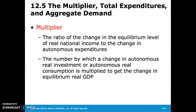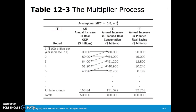The multiplier is the ratio of the change in the equilibrium level of real national income to the change in autonomous expenditures — the number by which a change in autonomous real investment or autonomous real consumption is multiplied to get the change in equilibrium real GDP. For example, assuming the marginal propensity to consume equals 0.8, a $100 billion increase in real GDP leads to an $80 billion increase in planned real consumption, which in turn increases real GDP by $80 billion, and so on until that initial $100 billion increase totals $500 billion of real GDP increase.